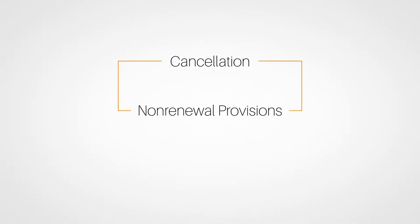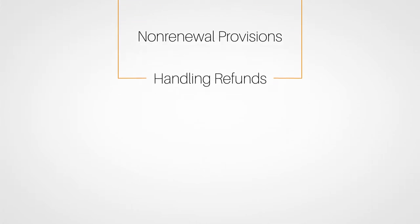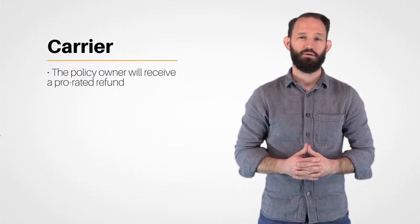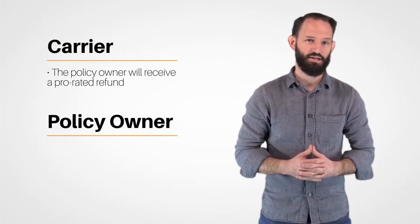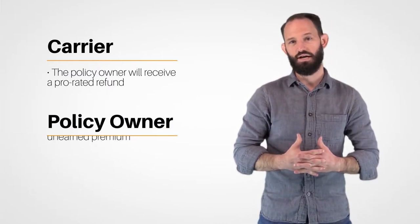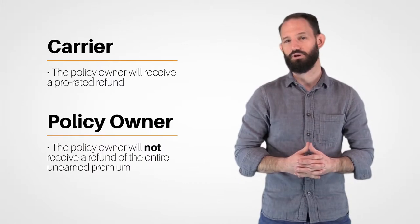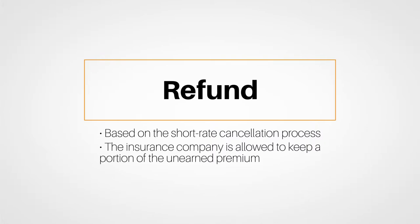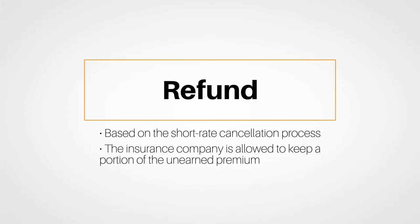In the last segment, we started out by discussing cancellation and non-renewal provisions on a general basis and how refunds must be handled in the event of a policy being canceled. If the insurer cancels the policy, the policy owner will receive a prorated refund. But if the policy owner cancels the contract, in certain cases they will not receive a refund of the entire unearned premium. Instead, the refund is based on the short rate cancellation process and the insurance company is allowed to keep a portion of the unearned premium.